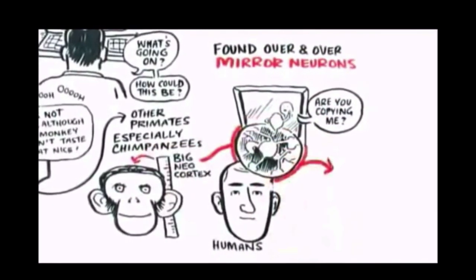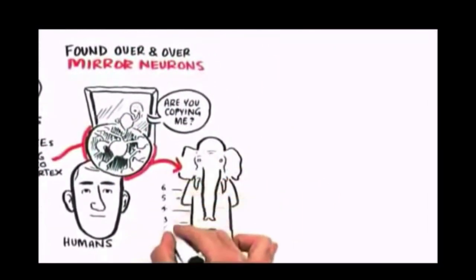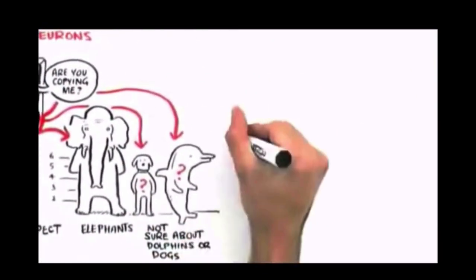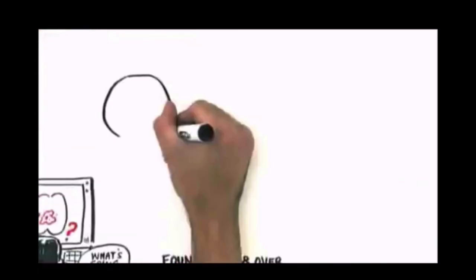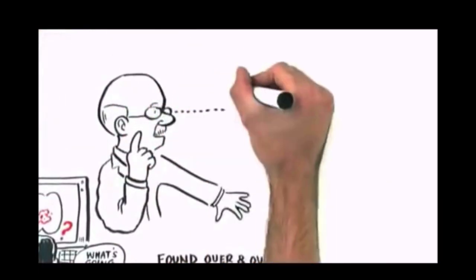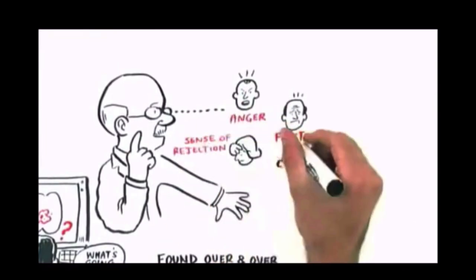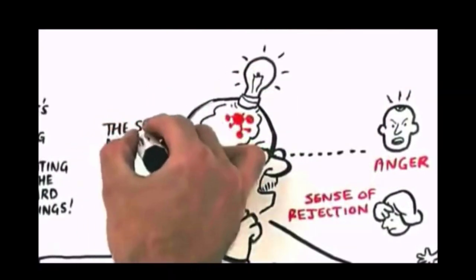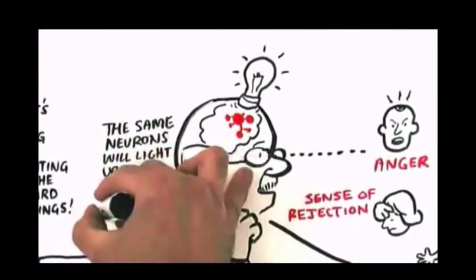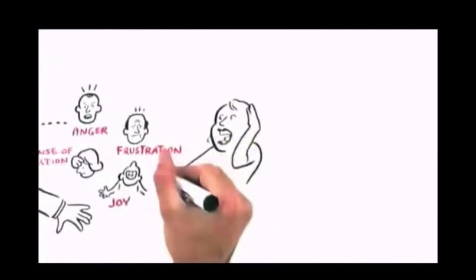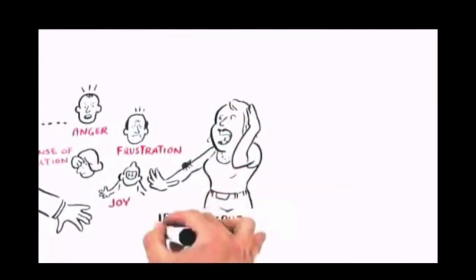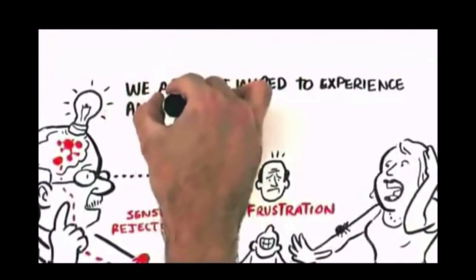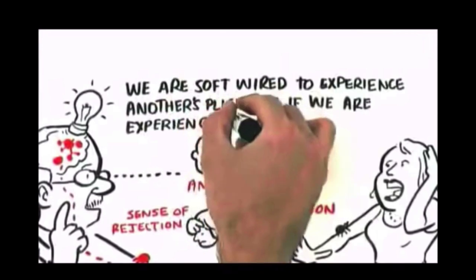They then began to put MRI brain scanning machines on other primates — especially chimpanzees with our big neocortex — and then on humans, and what they found over and over again is something called mirror neurons. We are apparently soft-wired — some primates, all humans, possibly elephants — so that if I'm observing your anger, your frustration, your sense of rejection, your joy, and I can feel what you're doing, the same neurons will light up in me as if I'm having that experience myself. We know that if a spider goes up someone's arm and I'm observing it, I'm going to get a creepy feeling — we are actually soft-wired to experience another's plight as if we are experiencing it ourselves.